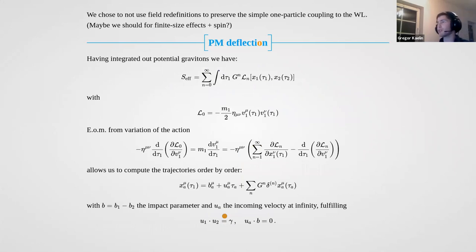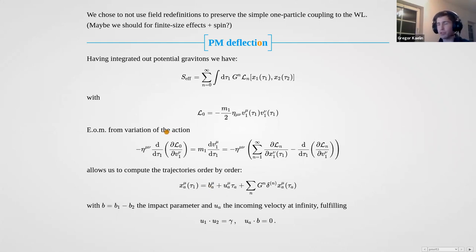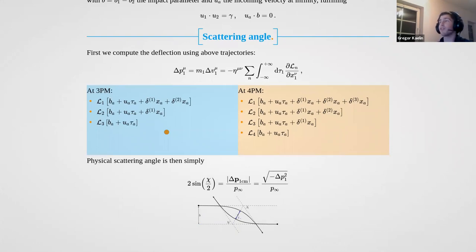After computing the effective Lagrangian — written as a PM expansion in powers of G — I cannot directly solve the equations of motion analytically, as Rafael already told you. So I'm going to expand around some impact parameter, with incoming particles having velocities u1 and u2, and expand to higher order. We're doing that purely symbolically — not performing many integrals except some trivial delta function integrals. What I actually want to compute is the scattering angle, or in other language, the deflection of this worldline.